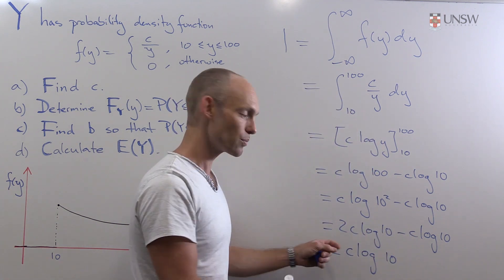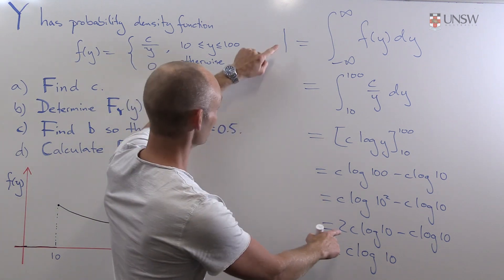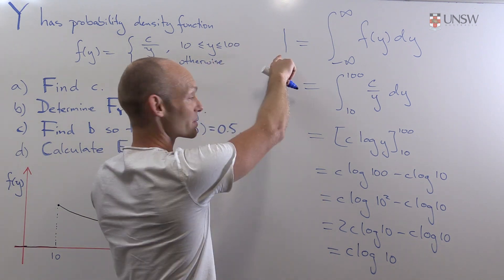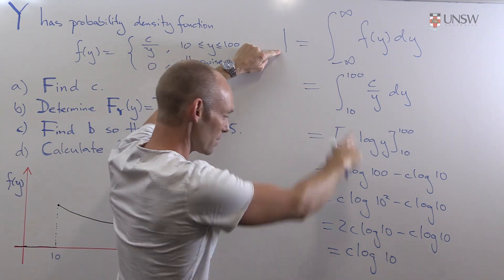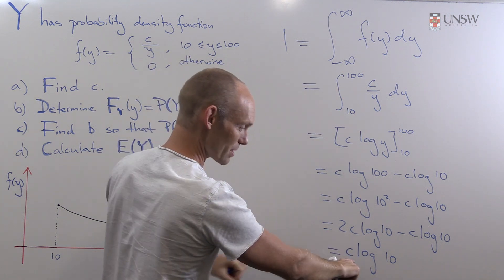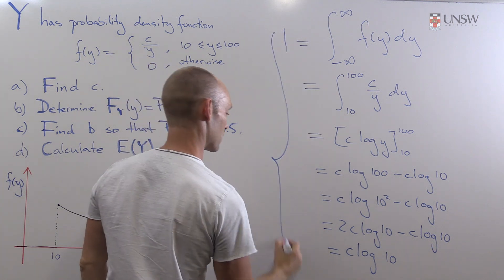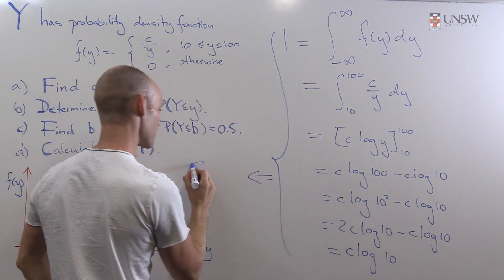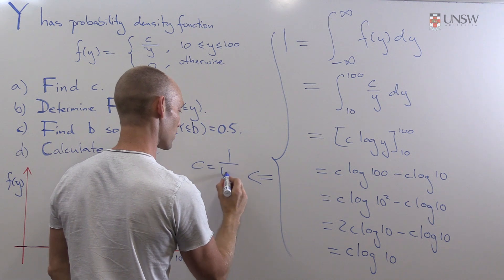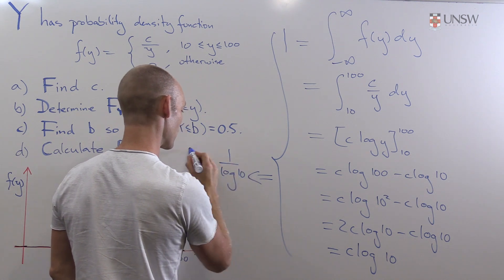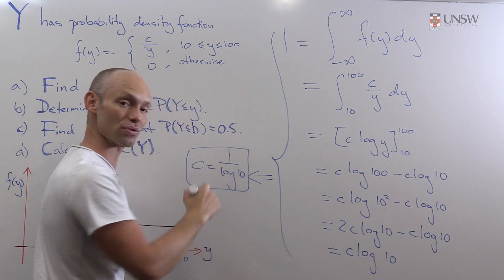Okay, what were we doing? We were trying to find c. So if we remember what we were doing right at the beginning, we started with 1. Apparently 1 was equal to c log 10. So this gives us then that c is in fact just equal to 1 over log 10. And that is in fact the answer to part a.